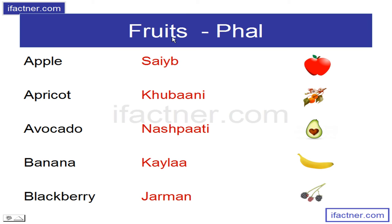Phal – Fruits. Saeb – Apple, A-P-P-L-E, Apple. Khubani – Apricot, A-P-R-I-C-O-T, Apricot. Nashpati – Avocado, A-V-O-C-A-D-O, Avocado.